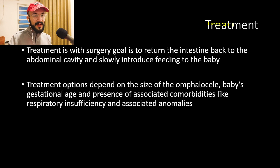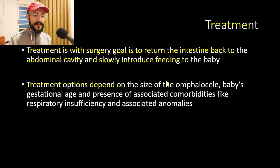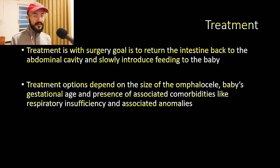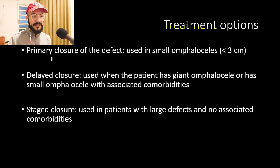The treatment is surgical, with the goal of returning the intestine to the abdominal cavity and slowly introducing feeding. Treatment options depend on the size of the omphalocele, the baby's gestational age, and the presence of associated comorbidities such as respiratory insufficiency or cardiac anomalies. Treatment options include primary closure, delayed closure, and staged closure of the defect.